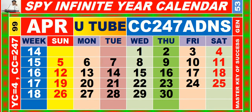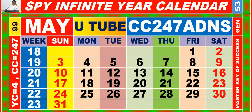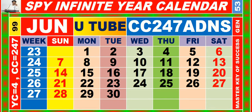Calendar for the month of May, having calendar code equal to 247. Calendar for the month of June, having calendar code equal to 247.